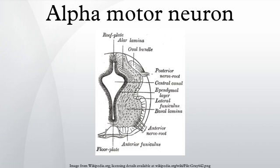An exception is the trochlear nucleus in the brainstem, which innervates the superior oblique muscle of the eye on the opposite side of the face. In the brainstem, alpha motor neurons and other neurons reside within clusters of cells called nuclei, some of which contain the cell bodies of neurons belonging to the cranial nerves. Not all cranial nerve nuclei contain alpha motor neurons; those that do are motor nuclei, while others are sensory nuclei.